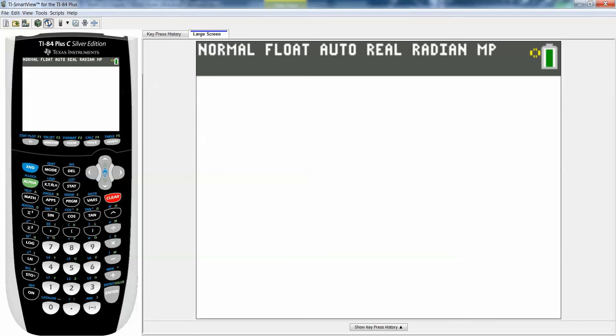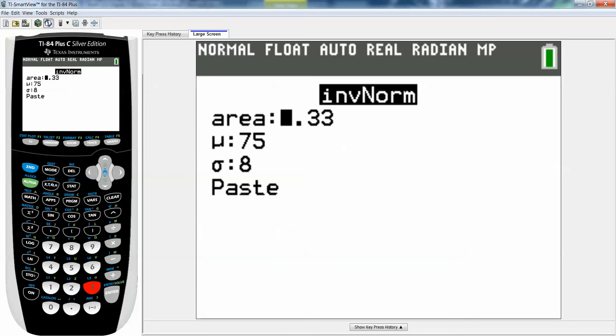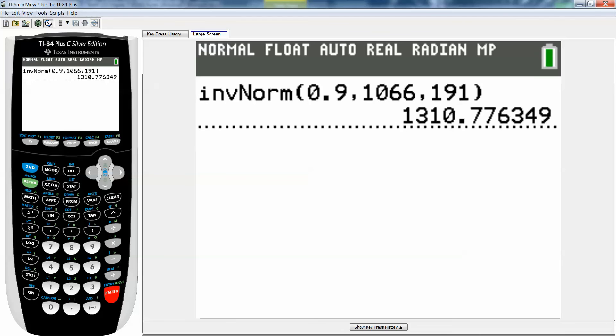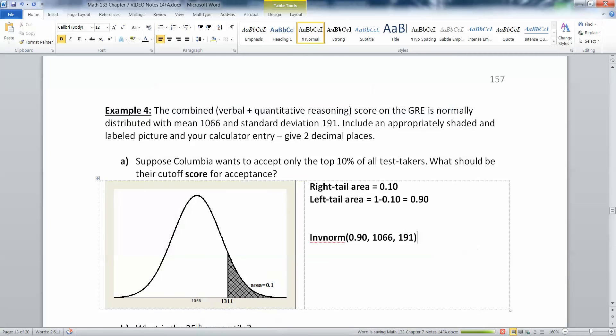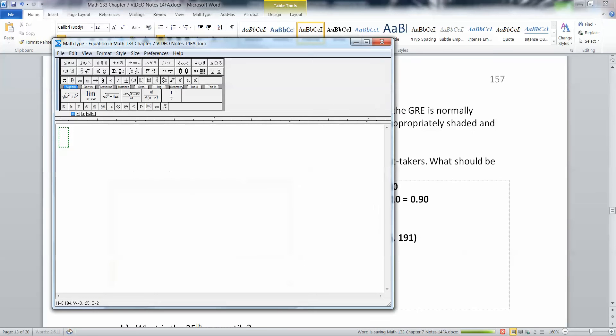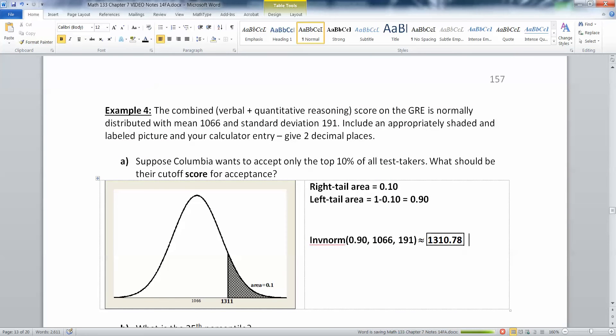So clear this. Second distribution, number three, 0.90, clear. 0.9, 1066, 191. And then I'm going to press enter, enter. And that's 1310.78. So there we have it.